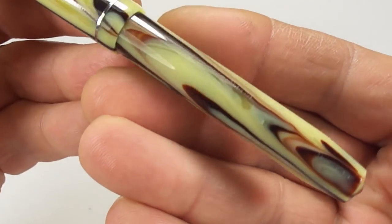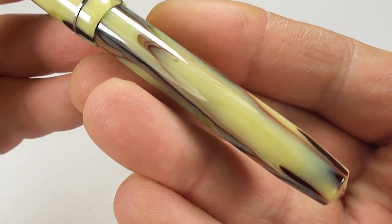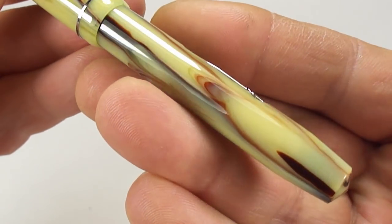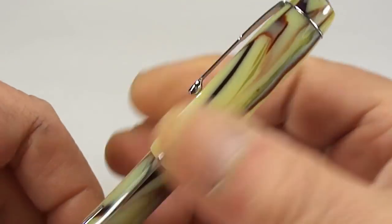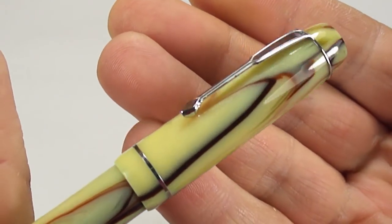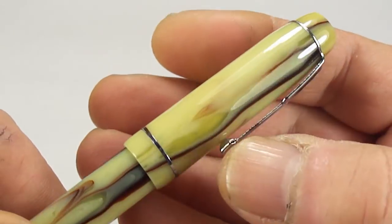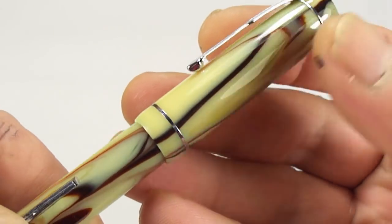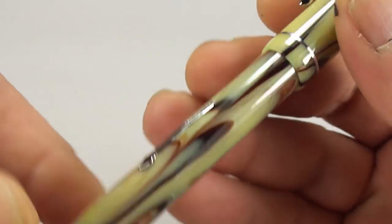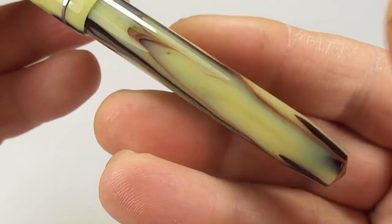It comes in this absolutely gorgeous creamy off-white color and it has these streaks or swirls of browns and blacks all around the pen. If we show you the cap, you can see these lines of browns and darker black colors as well. All in all, I think it looks absolutely gorgeous.